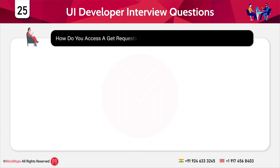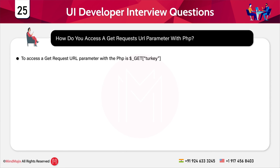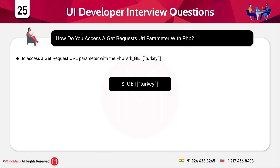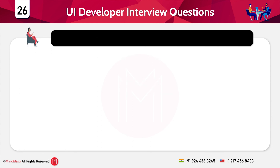The next question is: how do you access a GET request URL parameter with PHP? To access a GET request URL parameter with PHP, you use the $_GET method and inside it you mention the parameter you want. For example, you can pass a parameter such as 'turkey'.